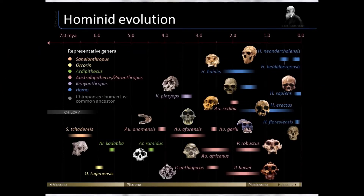Welcome back. Today we're going to talk about the australopithecines — this group here shown in pinkish color. We'll start with Australopithecus afarensis, then lump the rest together, focusing on individual traits at each step and, more importantly, how they differ from genus Homo, which is displayed in blue and includes us at the top.